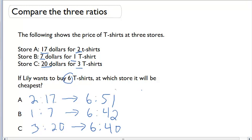So now I have all of these stores under the same terms. Each gives us a price for six shirts. Store A is fifty-one dollars for six shirts, Store B is forty-two dollars for six shirts, and Store C is forty dollars for six shirts. Where's the best deal? The best deal is going to be the cheapest, and the cheapest in this case is Store C, where it will only cost you forty dollars to buy six shirts.